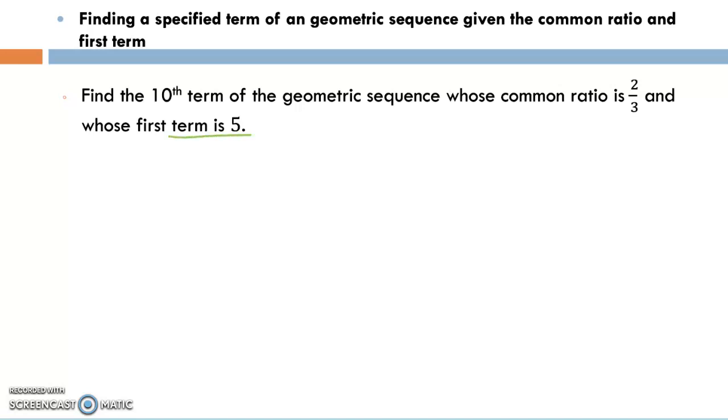The first term being five means a₁ equals five, and the common ratio is two-thirds so r equals two-thirds. We want to find the tenth term, so a₁₀ equals what?